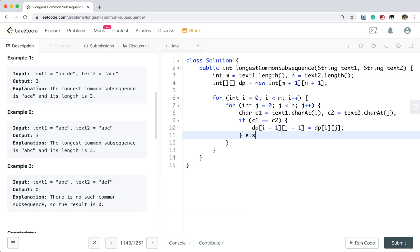Otherwise we know that should be DP[i+1][j+1] equals Math.max of DP[i+1][j] and DP[i][j+1].